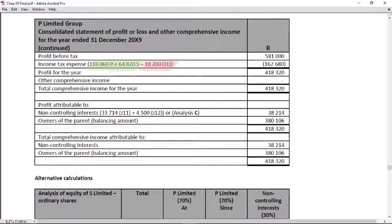your consolidated SPLOCY is not complete until you did this attribution portion at the bottom. When we did the consolidation journal entries, we already spoke about the non-controlling interest and specifically profit attributable to NCI. I've indicated the amount that will be presented in this SPLOCY as journal 11 plus journal 12, which is your profit attributable to the ordinary share NCI added to that, the profit attributable to the preference share NCI.